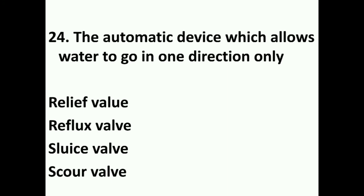An automatic device which allows water to flow only in one direction is a reflex valve or non-return valve. A relief valve is used when pressure needs to be released from a pipe. A sluice valve (gate valve) controls the full opening or closing of flow. The non-return valve prevents backflow.